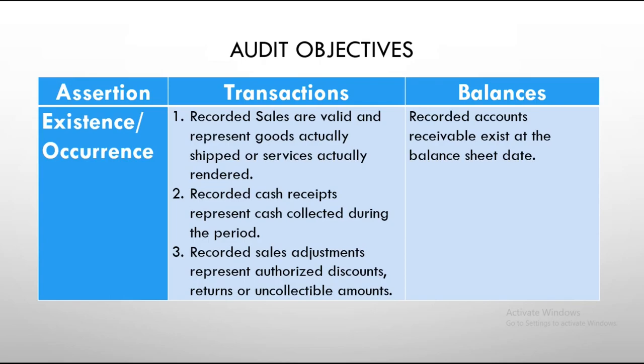The assertions cover transactions and balances. The first assertion is existence or occurrence. To verify this, in terms of transactions, recorded sales are valid and represent goods actually shipped or services actually rendered. You check from books of accounts down to the source document — from the revenue or sales book down to the bill of lading, credit sales invoice, or sales invoice of the company. Then recorded cash receipts represent cash collected during the period.